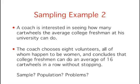In this example, a coach is interested in seeing how many cartwheels the average college freshman at his university can do. The coach chooses 8 volunteers, all of whom happen to be women, and concludes that college freshmen can do an average of 16 cartwheels in a row without stopping.